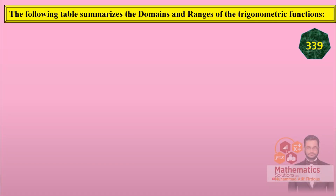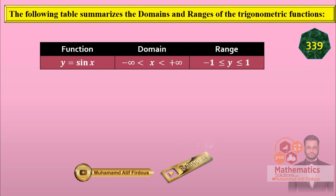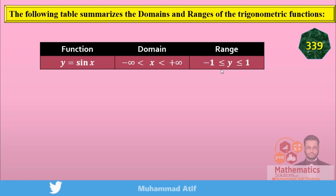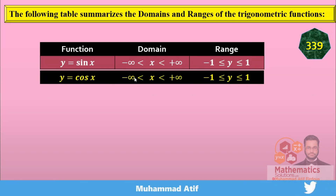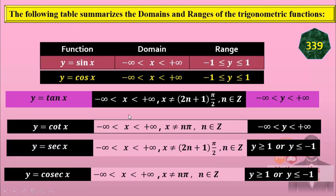This is an important table from page 339 covering domain and range — similar to what we had in chapter 9.4 in first year with simple domain and range. You have to remember this table: y = sin x has domain minus infinity to infinity and range minus one to one. Cos x also has domain minus infinity to infinity and range minus one to one. This table has a lot of objective questions, so remember it from page 339.